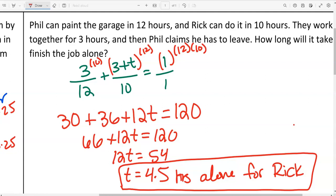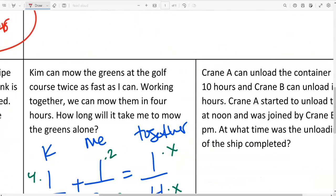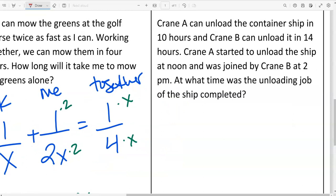We good? Are we okay? Because we're going to level up a little bit each time. I'm going to go to the pipe question below here. So the pipe A, pipe B. Crane A can unload the container ship in 10 hours. And crane B can unload it in 14 hours. Crane A started to unload the ship at noon and was joined by crane B at 2 p.m. At what time was the unloading job of the ship completed? So this time, someone started off by themselves, and then someone else came in.